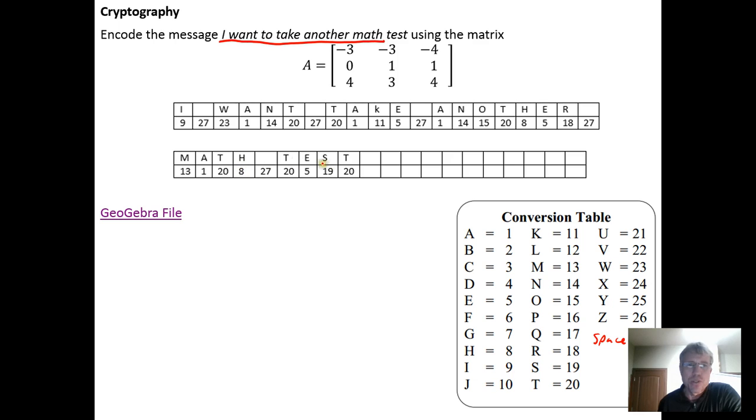The idea is you lay the message out, "I want to take another math test," and then you give each letter of the alphabet its position number in the alphabet. If you have a blank space in the message you just assign it another number. Then you have an encoding matrix, and the idea is that you take the encoding matrix A.